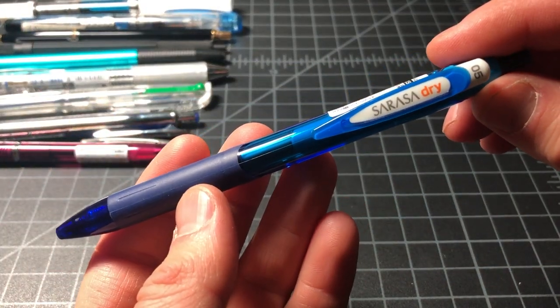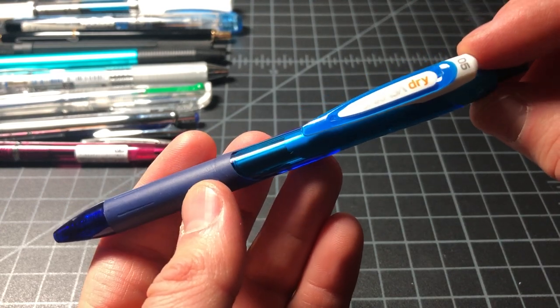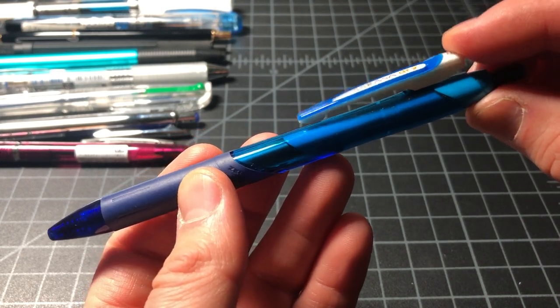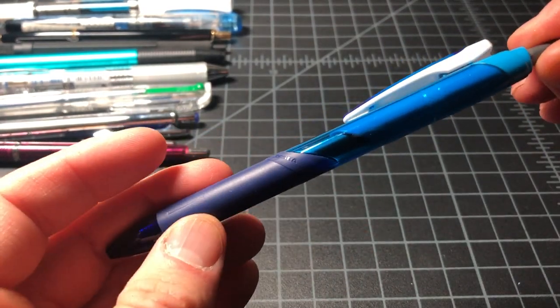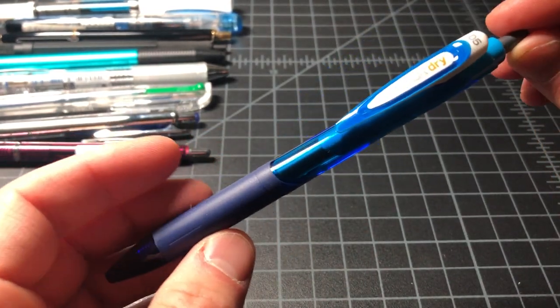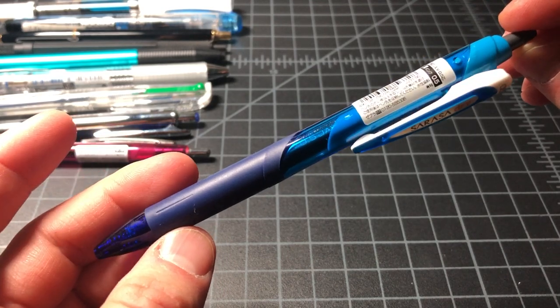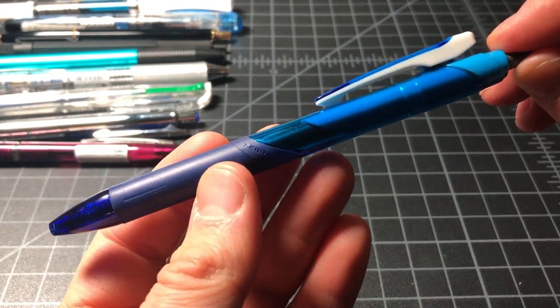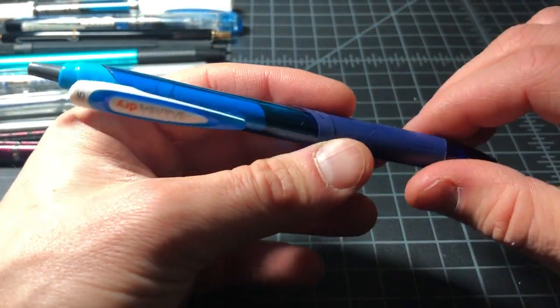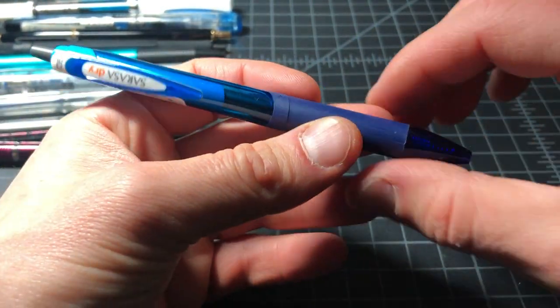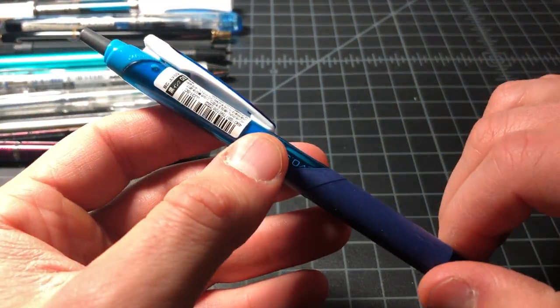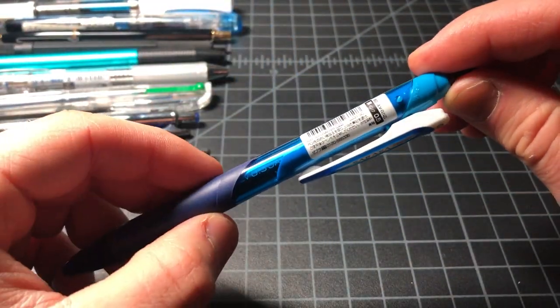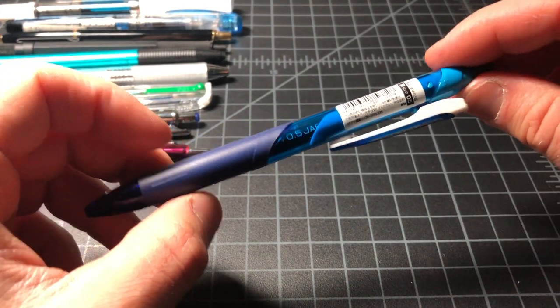Lastly we have another ideal day-to-day pen. This is the Zebra Sarasa Dry. It's very quick drying, and it's a cool-ish looking pen, but I don't use it for its aesthetics. I use it because it dries so quickly and it's just so well behaved. Being a left-handed individual, the fact that it dries really quickly, even in a 0.5 millimeter, I think is really ideal for me. So I use this pen a fair bit.